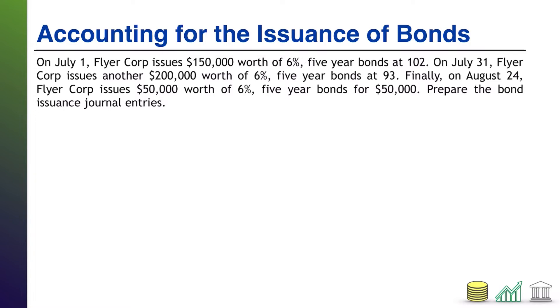All right, welcome back. So here we go, starting at the first date, July 1. Flyer Corps issues $150,000 worth of 6% five-year bonds at 102.